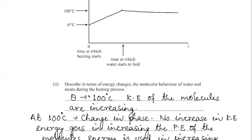At the point of phase change, the temperature remains constant — it's the potential energy that's increasing. So from theta to 100°C, the kinetic energy is increasing. From 100°C onwards, the potential energy is increasing.